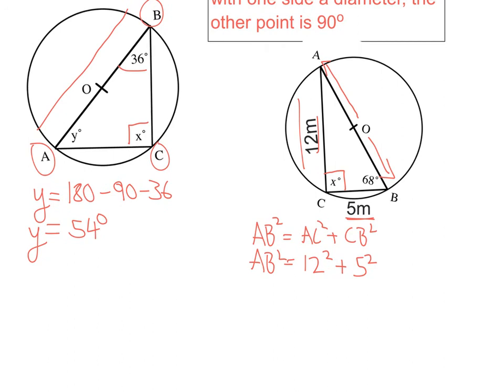So putting those values in and squaring them, I'm going to get 12 times 12 is 144, plus 5 squared, 5 times 5 is 25. Add them together, I'm going to get 169.